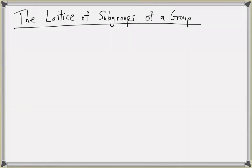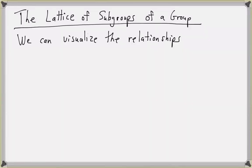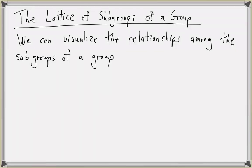Next, we're going to look at a graph that helps us visualize the structure of a group by looking at the relationships between the various subgroups. This graph is called the lattice of subgroups of a group, and it helps us visualize the relationships among the subgroups.